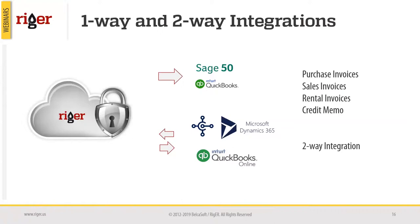Otherwise, there is a two-way integration where we can exchange information between two systems. For example, QuickBooks Online and RIGOR can exchange information about clients. If you enter a client in RIGOR, it will appear in QuickBooks. And if you edit that client in QuickBooks, after synchronization it will be edited in RIGOR as well.